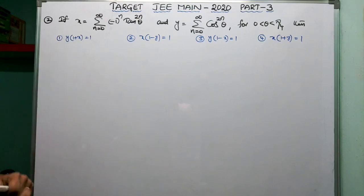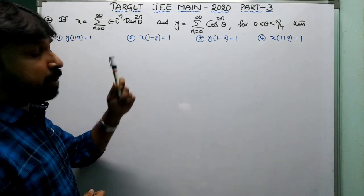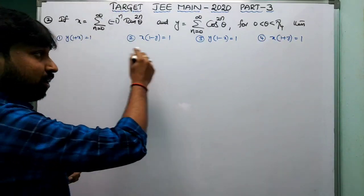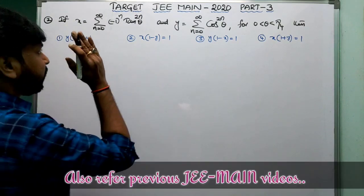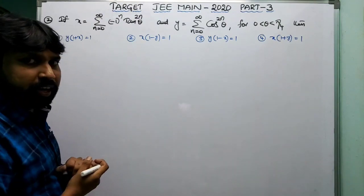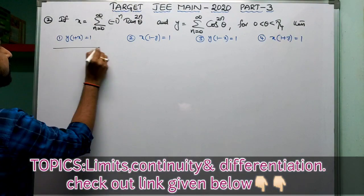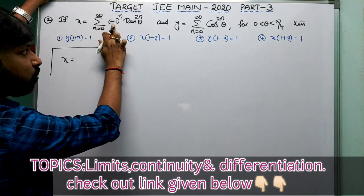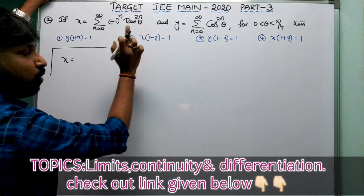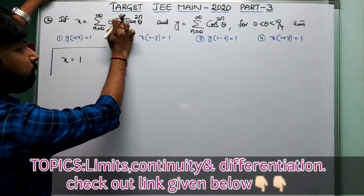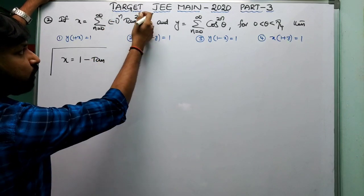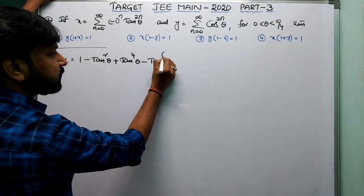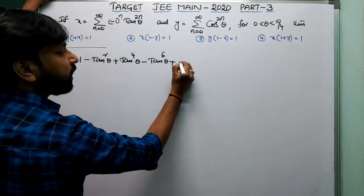Coming to question number 2: if x = Σ (n=0 to ∞) (−1)ⁿ tan²ⁿθ and y = Σ (n=0 to ∞) cos²ⁿθ, for 0 < θ < π/4, then what is the relation between x and y? Let us simplify x and y values, then use option verification. Both are infinite series and also GP. Whenever sigma is given, that is summation — n runs from 0 to infinity.